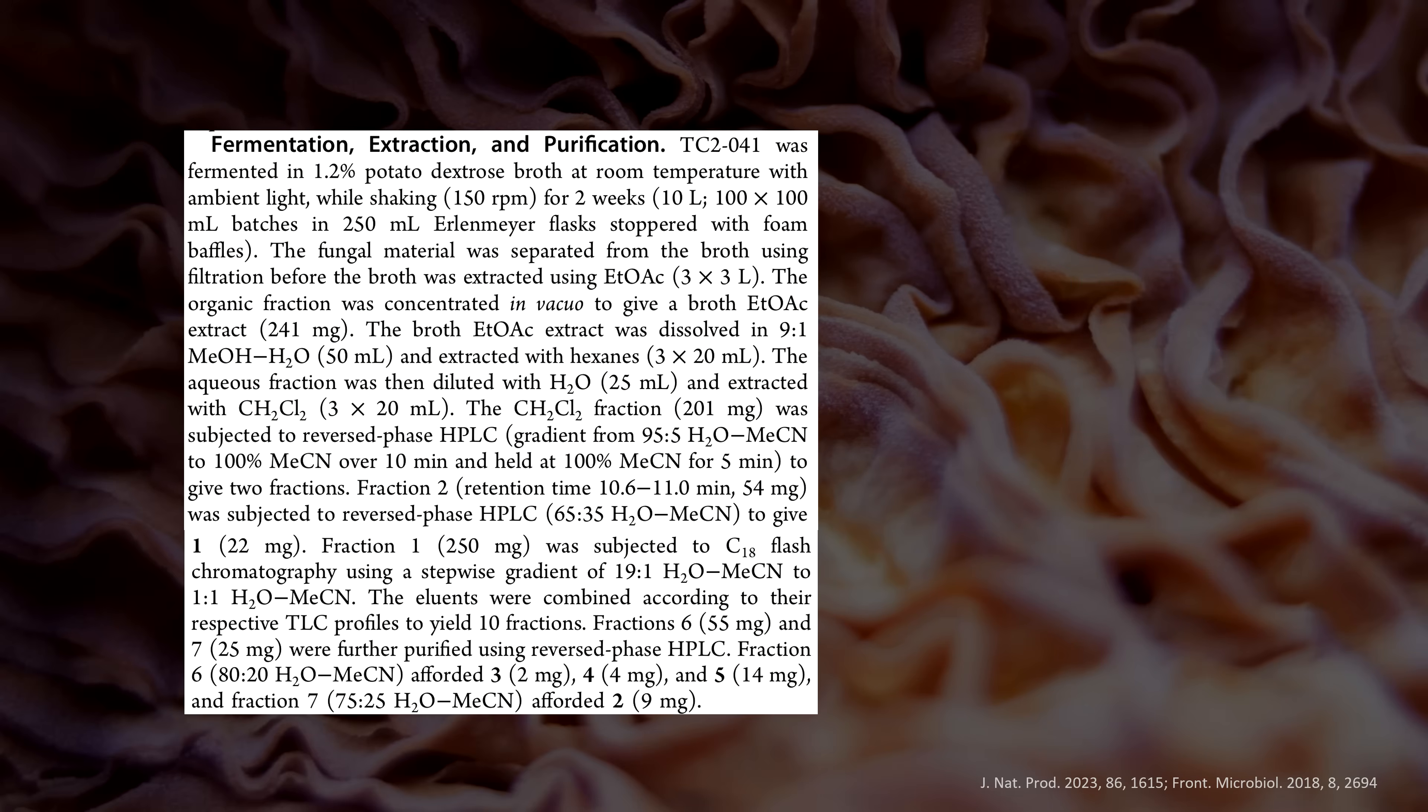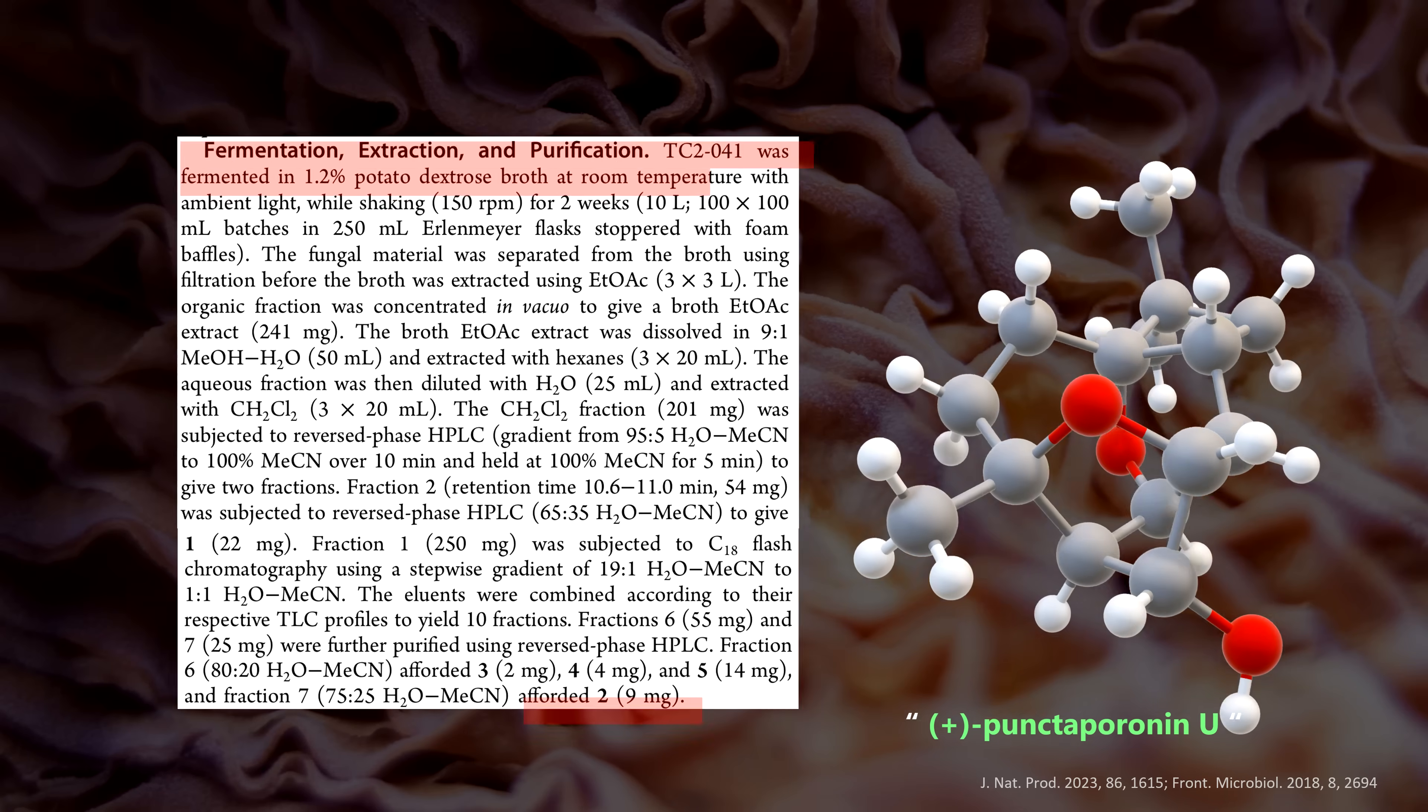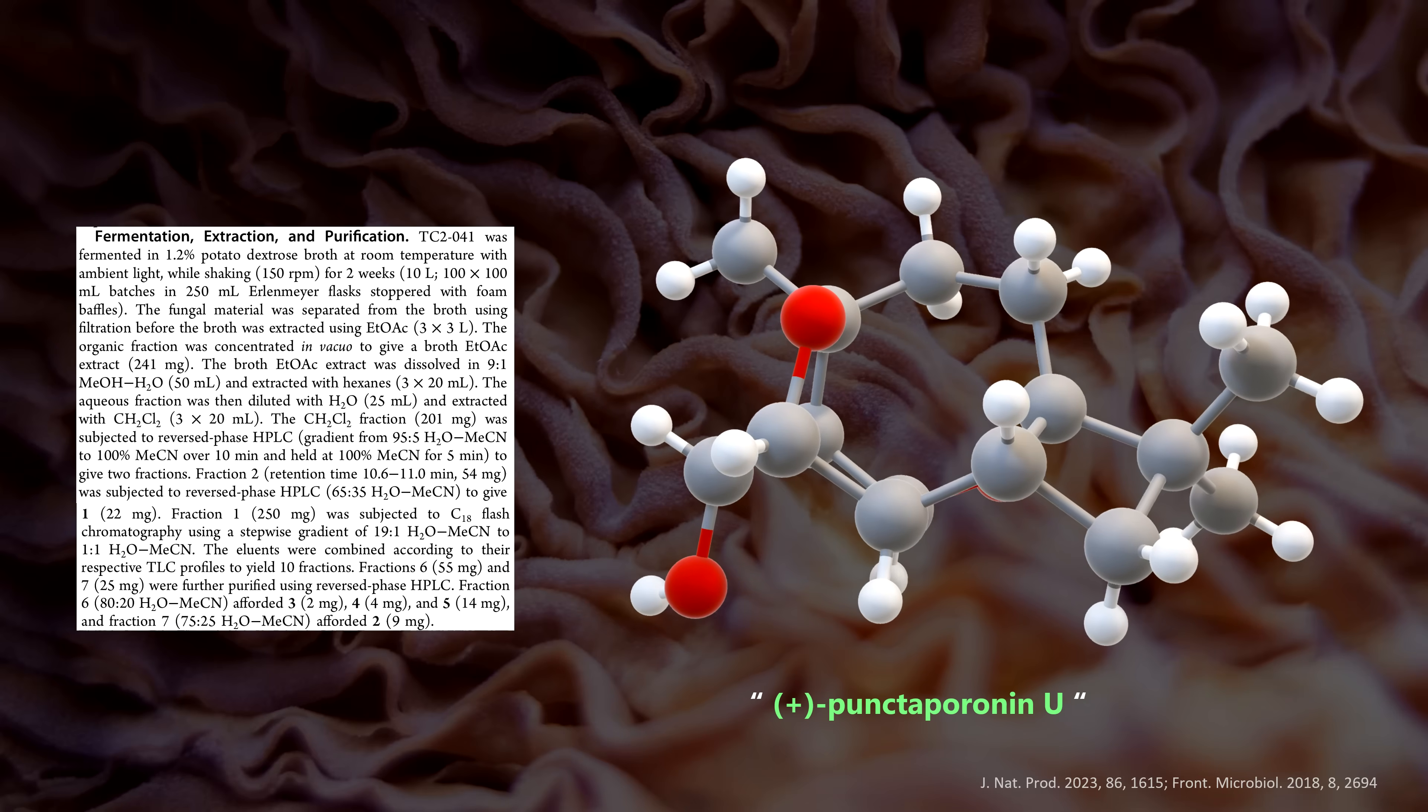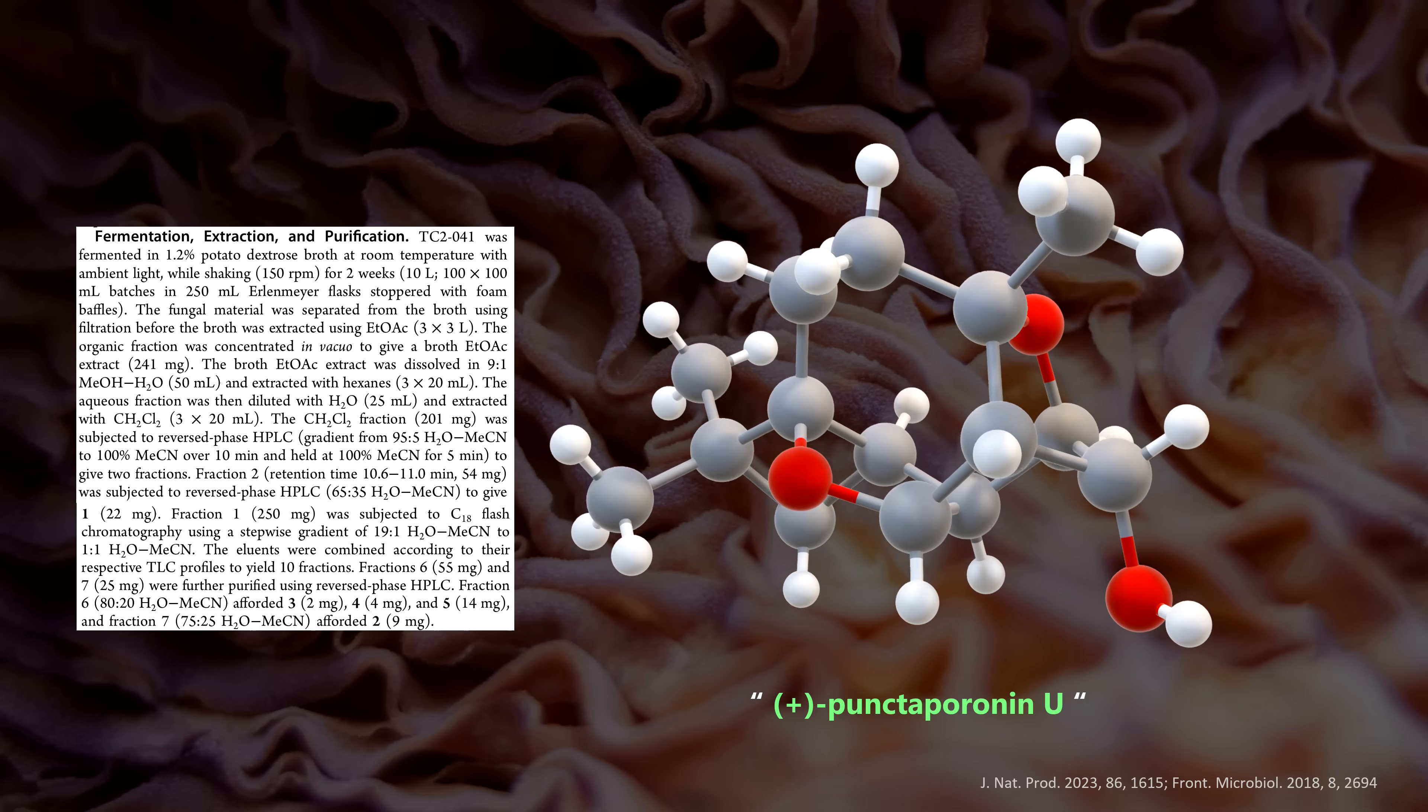You see, if you ferment your globosum buoy for two weeks in 10 liters of that potato water, you get enough organic material to run many extractions and separations and ultimately find 9 mg of this beautiful molecule. It only has oxygen, carbon and hydrogen atoms, but they're arranged in a cool cage-like architecture.